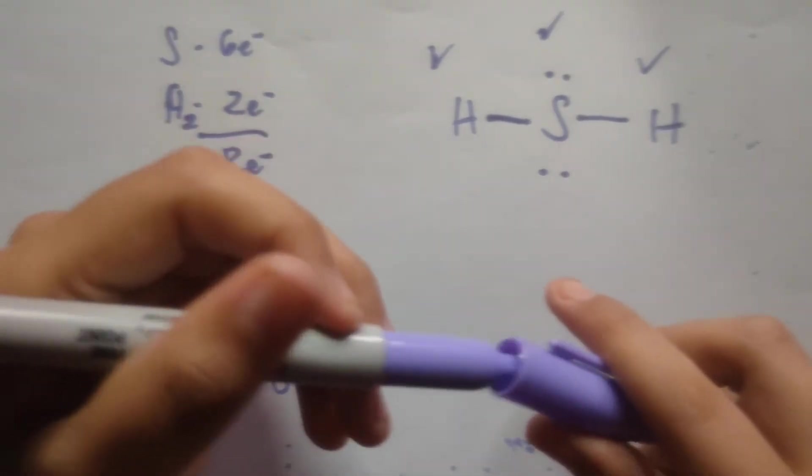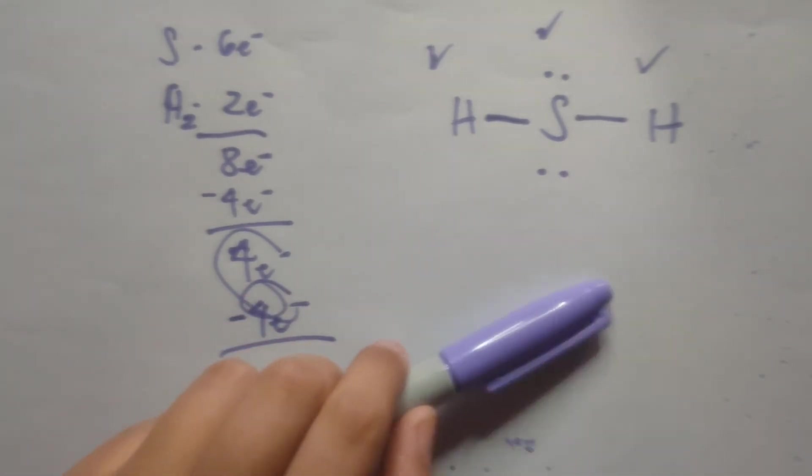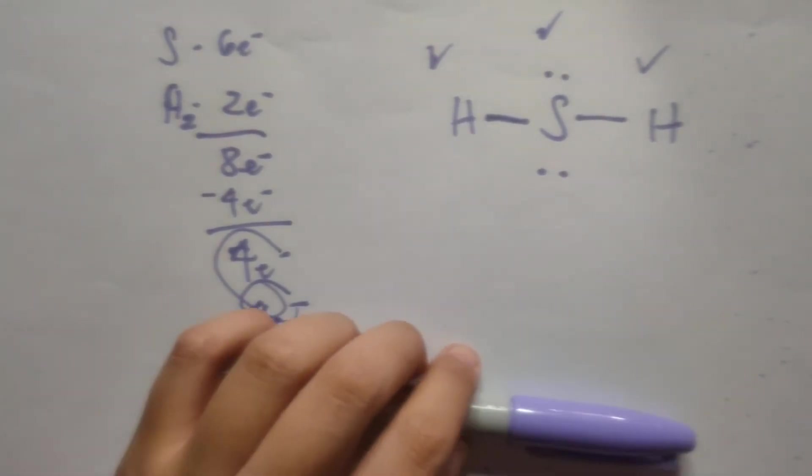So you can try it on other structures that you find. I like this method because it also takes into account the charges. And with that, when we're talking about the charges, we can actually check on this structure right here. We have your CO3, but this one has a charge of negative two.